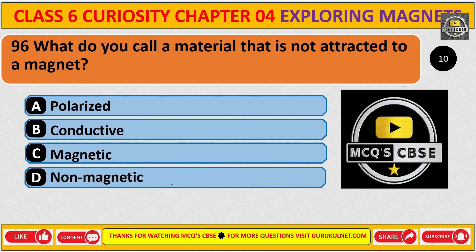What do you call a material that is not attracted to a magnet? The correct answer is D. Non-magnetic.